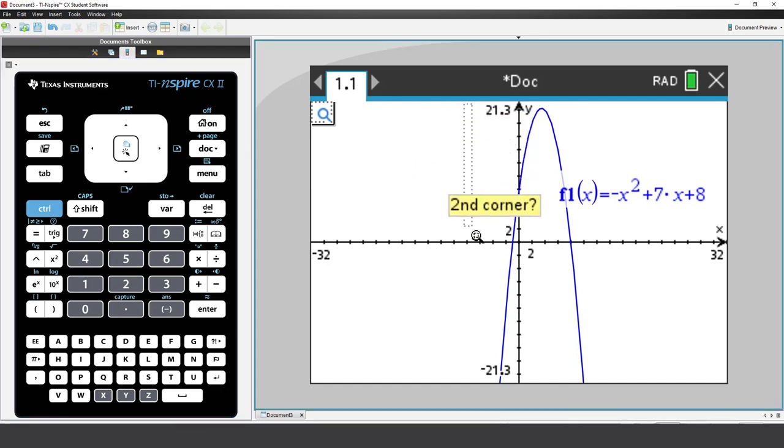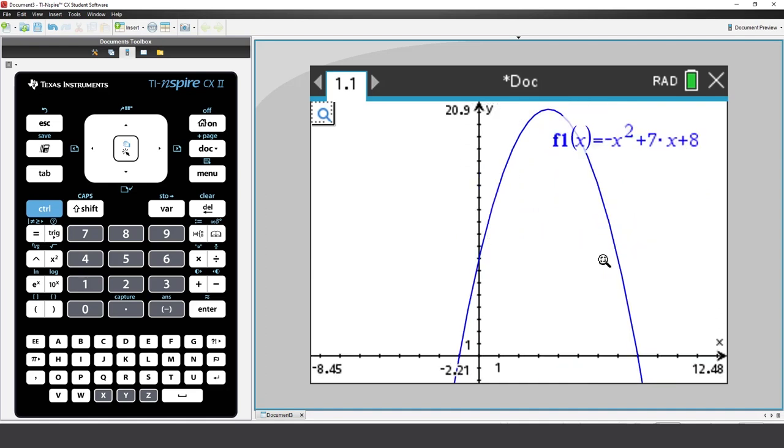Now, move the mouse to the bottom right corner and click. Now our graph occupies most of the screen.